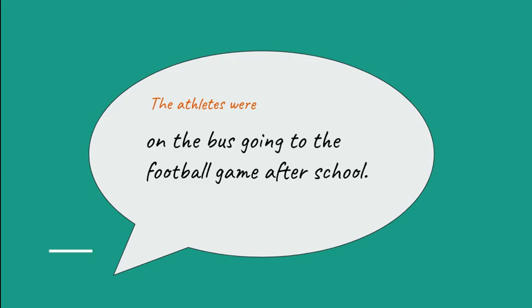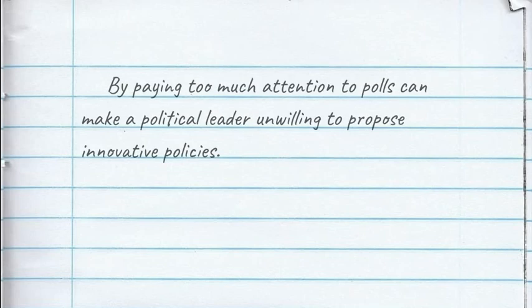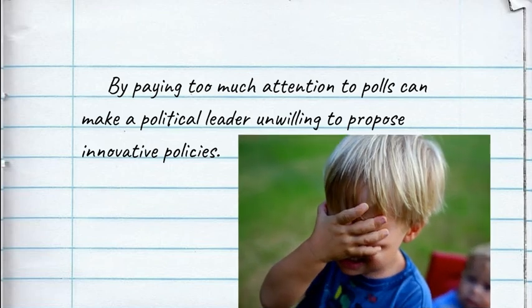Make sure you have a verb, even if it's only a B verb. Sometimes a person is trying to sound smart, so they write a sentence that gets too complicated and they lose track of what's going on. Don't be this guy. 'By paying too much attention to polls can make a political leader unwilling to propose innovative policies.' If you don't understand your sentence, who will?